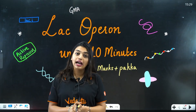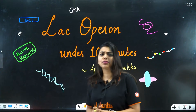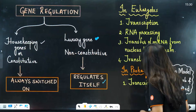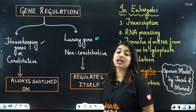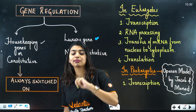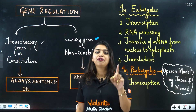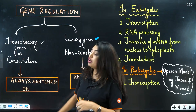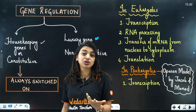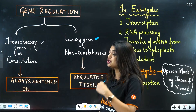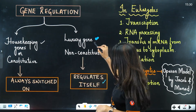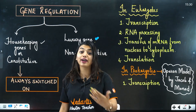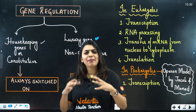We are going to learn the lac operon concept. Before going into the concept, you have to understand that there are two types of genes: the first is called the housekeeping gene or constitutive gene, and the second is called the luxury gene, non-constitutive gene, or regulated gene.